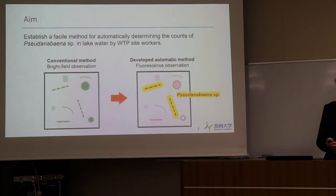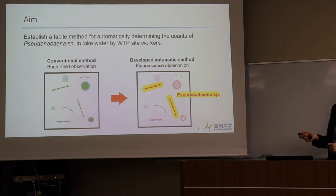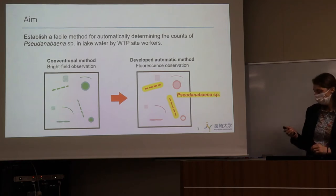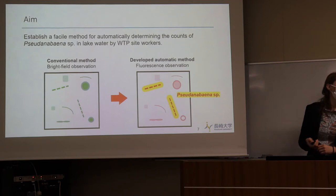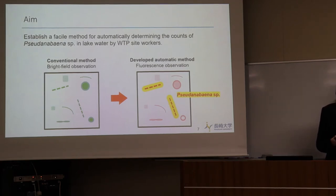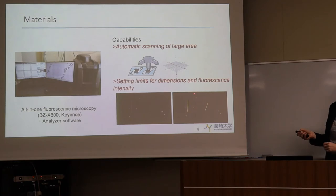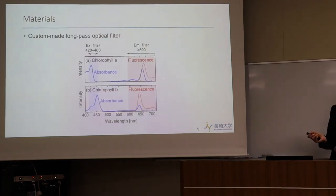Our objective was to use fluorescence microscopy instead of typical bright-field observation and to develop an automatic counting technique based on this. The advantage over bright-field observation is that in river water there are a lot of small debris, sand, or other living creatures that are not algae, and using fluorescence they will not appear on the image. We used an all-in-one fluorescent microscope that can scan a large area of samples, with software able to set limits for dimension and fluorescence intensity, and a custom-made long-pass filter to target specifically the chlorophyll contained in the algae.